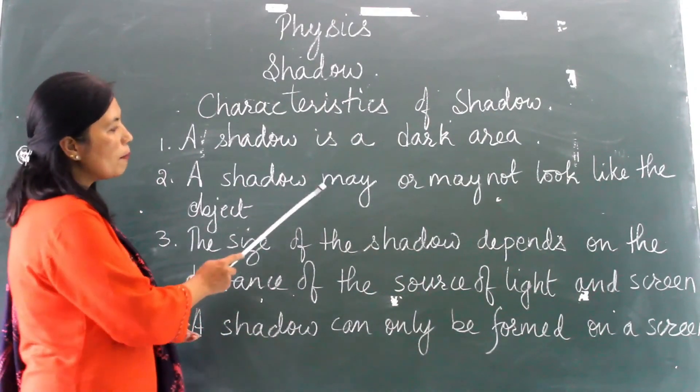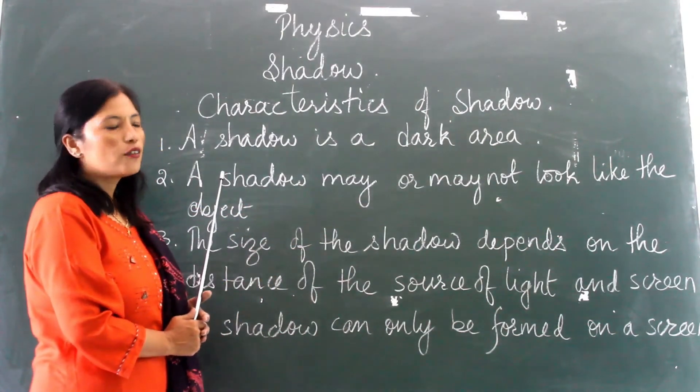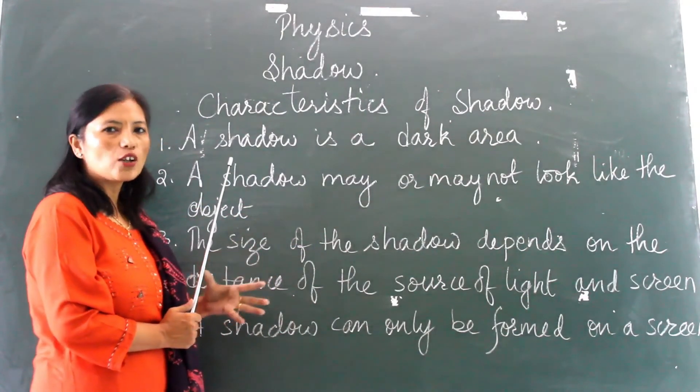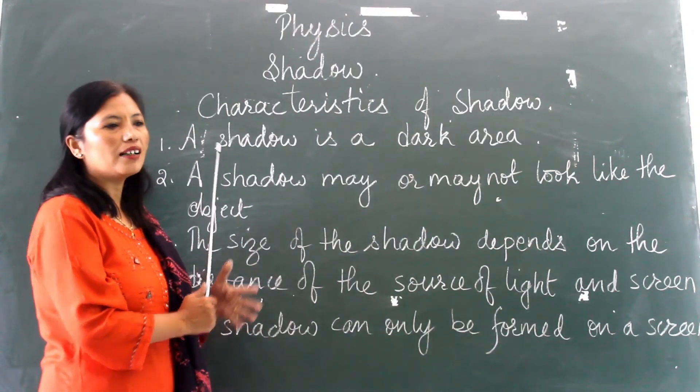A shadow may or may not look like the actual object. For example, sometimes the shadow will resemble the object, but sometimes it will just be a dark patch.